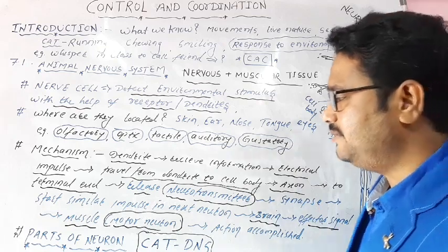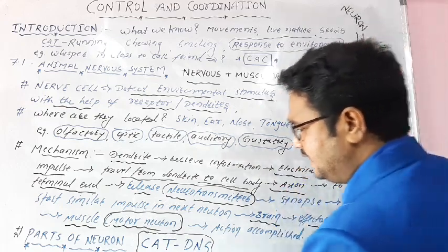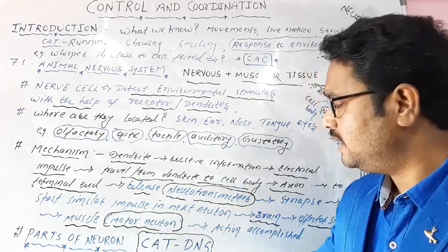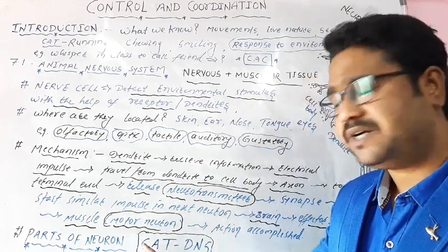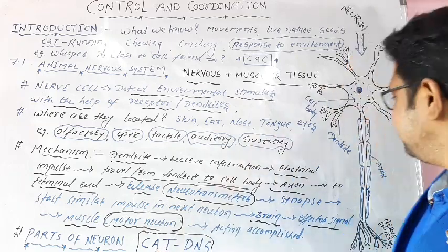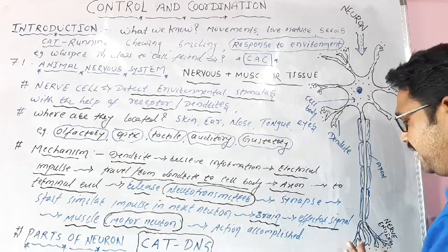What are the parts of this neuron? Simply remember the shortcut: CAT says do not shy. C for cytone or cell body - this is the cytone or cell body. A for axon - this long part is the axon. T for terminal knob where it releases the neurotransmitter.